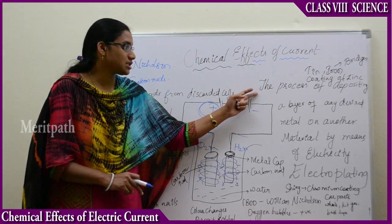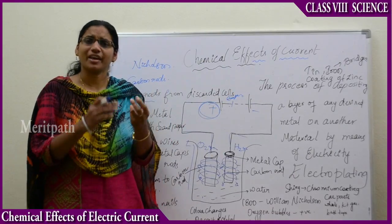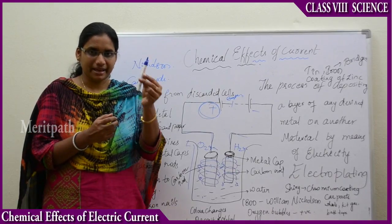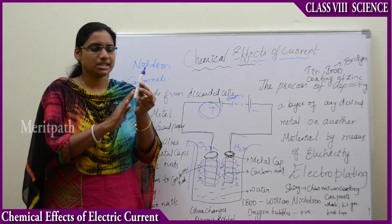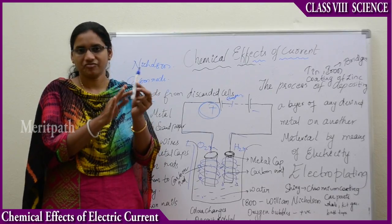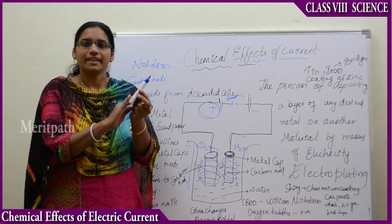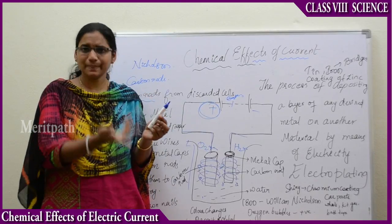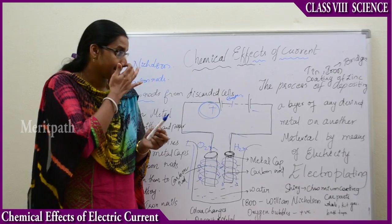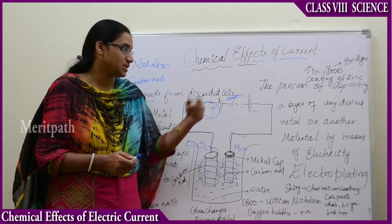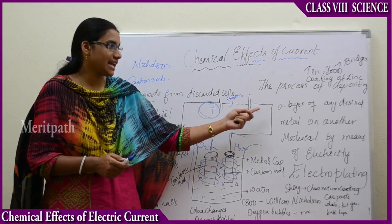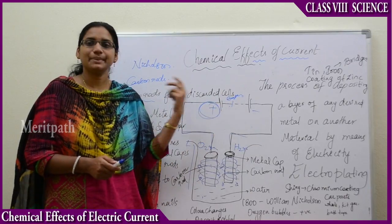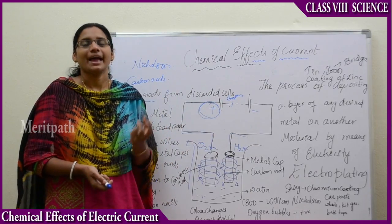The process of deposition of metals on the carbon rods is said to be as electroplating. That is, the process of depositing a thin layer of any desired material on another material. For example, if this is a pen, I am depositing a white color sticker on it — depositing one material on the other — this is simply known as electroplating.